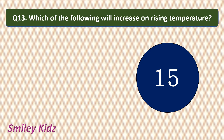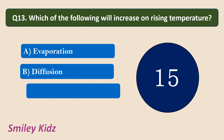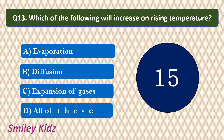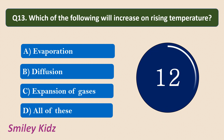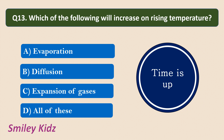Question number 13. Which of the following will increase on rising the temperature? Your options are Evaporation, Diffusion, Expansion of gases, or All of these. Your time starts now. Your time is up and the correct answer is All of these. With the increase in temperature, evaporation increases, diffusion is also very fast, and expansion of gases takes place. So all three — evaporation, diffusion, and expansion of gases — will increase on rising the temperature.